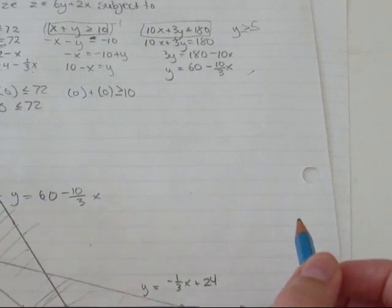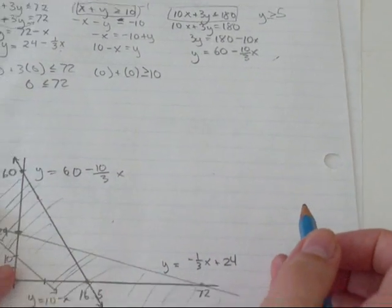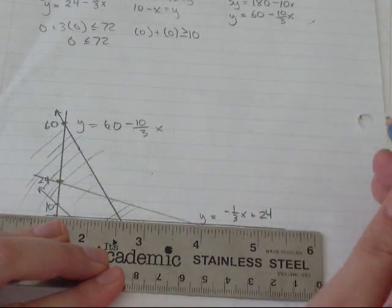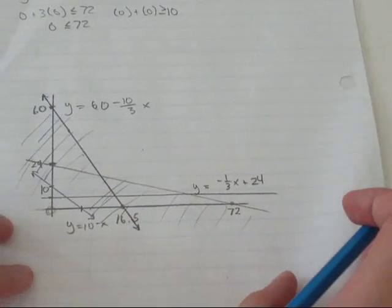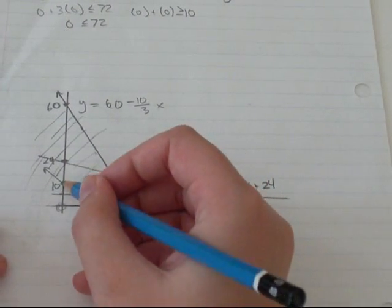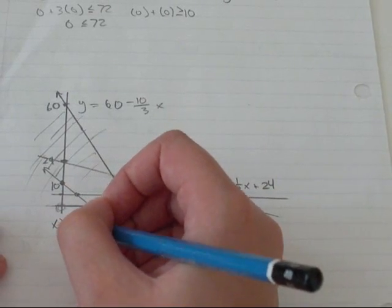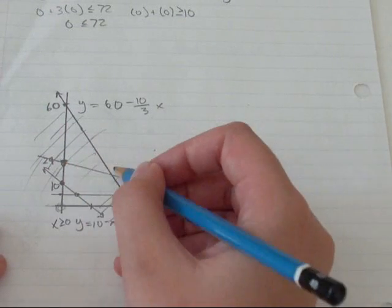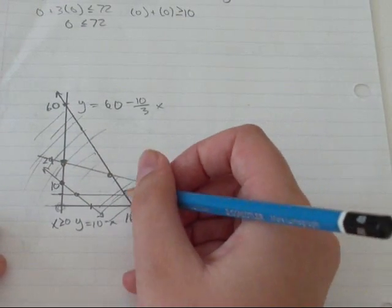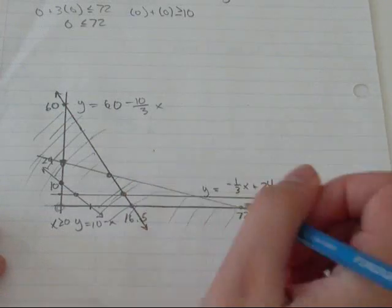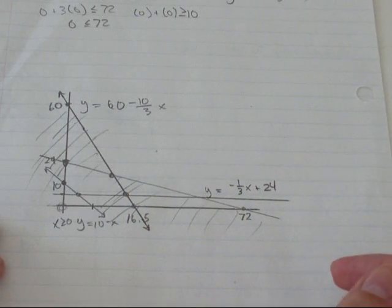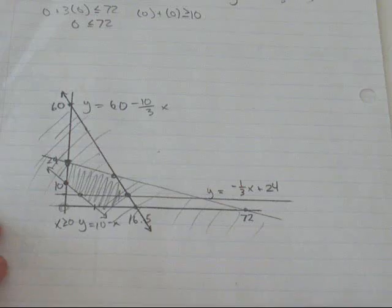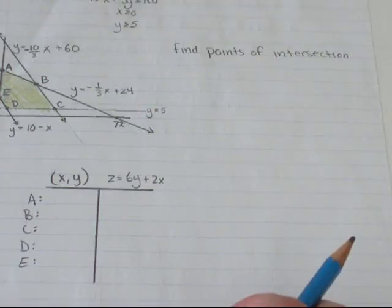So I also had y is greater than 5. So I said this was 10, so 5 is somewhere around there. So where are all my intersections of all my lines? Well, I've got one here. I've got one here intersecting with x is greater than or equal to 0. So I've got an intersection here, here, and here. Okay, so I'm going to switch back. This is obviously the feasible region. And I'm going to switch back to my other page.